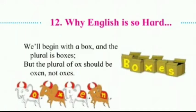Ox means bull. As you can see in the picture, if ox is one, then we call it ox. But the plural is not oxes — it is oxen. This is why the title of the poem is 'Why English is So Hard', because the plural of ox is oxen, not oxes.